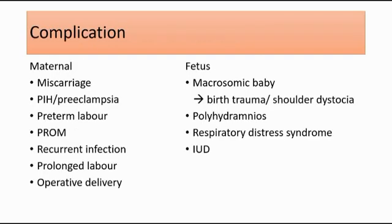For complications of GDM, maternal complications include miscarriage, pregnancy-induced hypertension or preeclampsia, preterm labor, PROM (pre-labor rupture of membrane), recurrent infection, prolonged labor, and operative delivery, mainly because the baby is bigger in size.